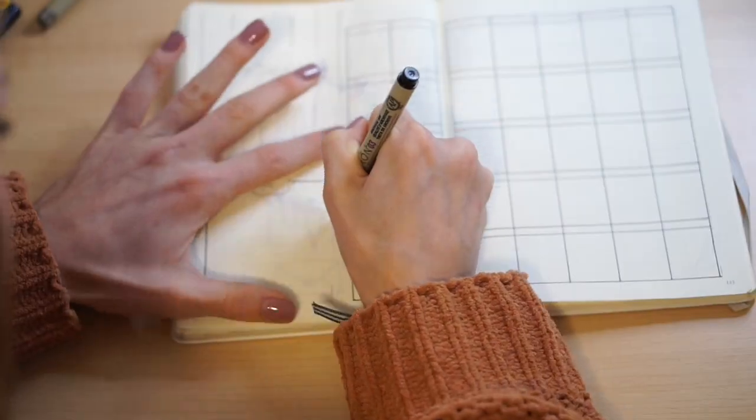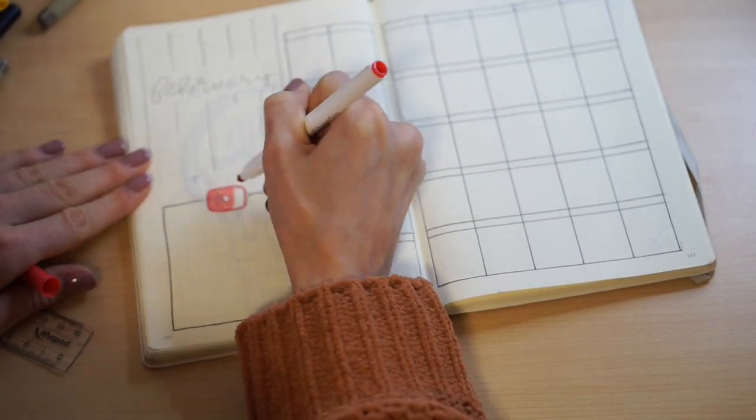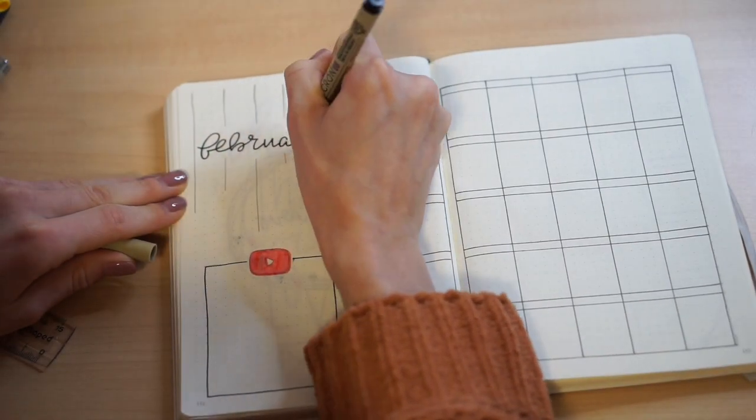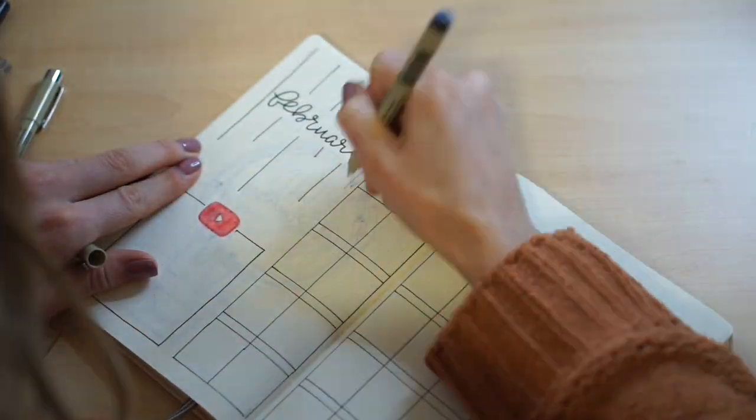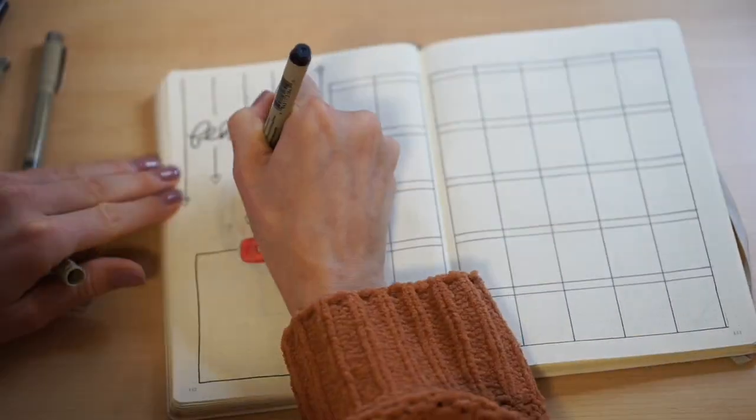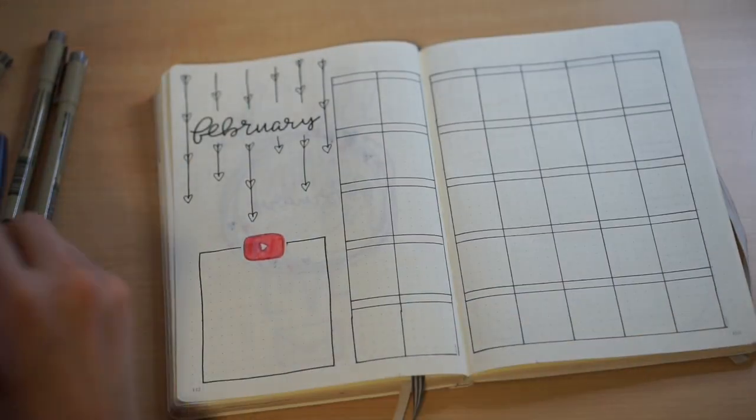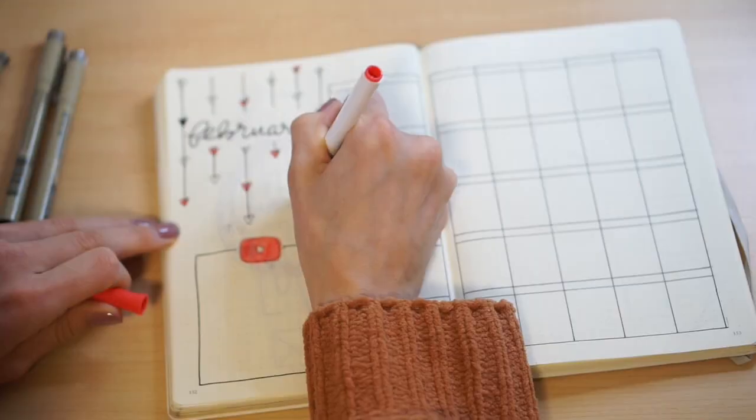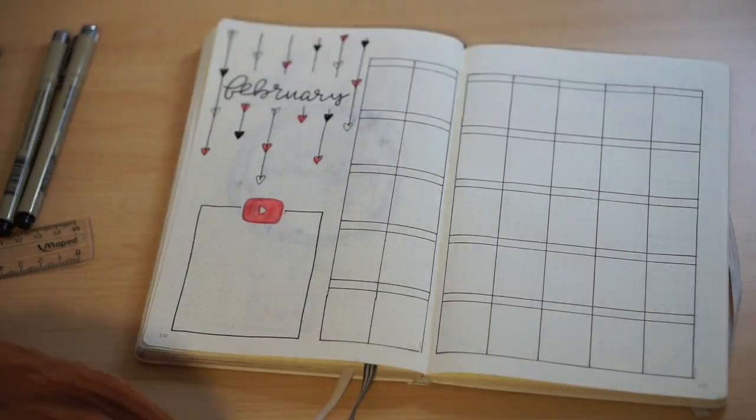The next thing that I'm drawing is my little YouTube growth tracker. This way I'm able to keep track of my progress on YouTube to see how many subscribers I'm gaining. I'm also doing my little February sign up top to show that this is obviously the month of February. I'm drawing little hanging strings with hearts on them, alternating between white, black, and pink colored hearts.